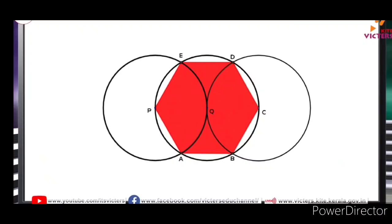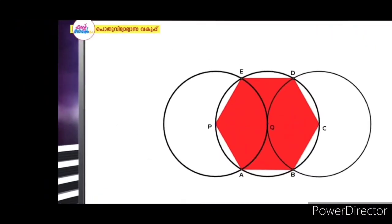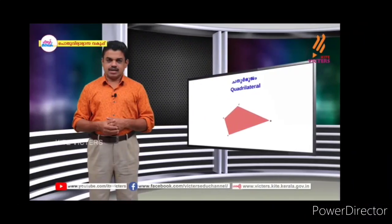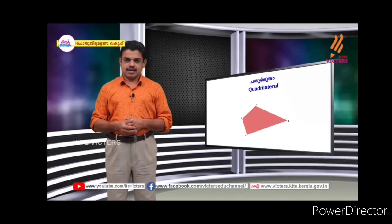The two circles are equal. The square of the triangle relates one to each side, and the square of the triangle is equal.